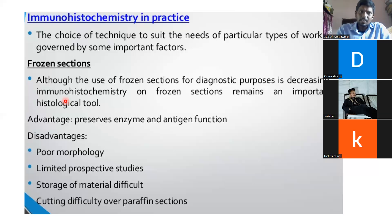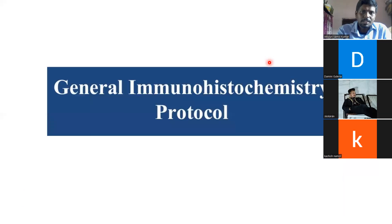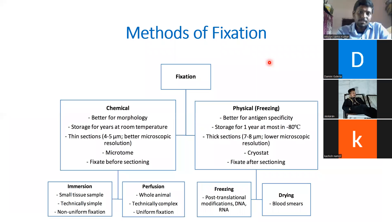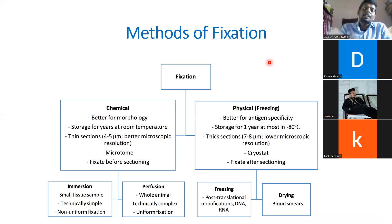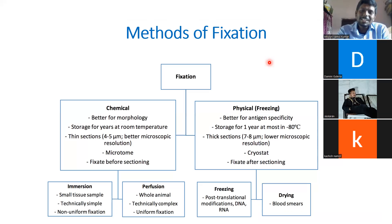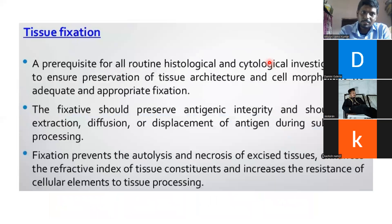Other classical methods include vapor fixation. For the next two classes we will focus entirely on fixation, sectioning, and mounting. There are many types of fixative methods we will discuss. We have chemical fixatives — immersion and perfusion — and physical fixatives — freezing and drying. The drying method of fixation has more advantages compared to the freezing technique.